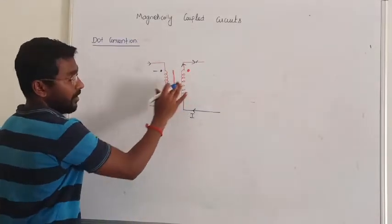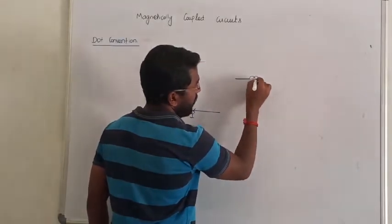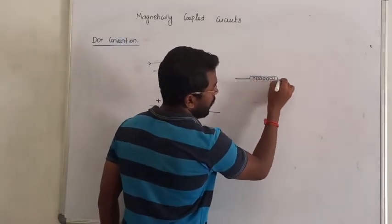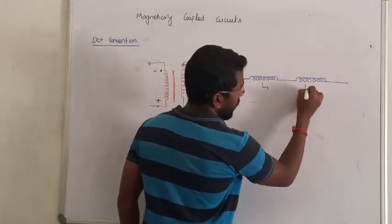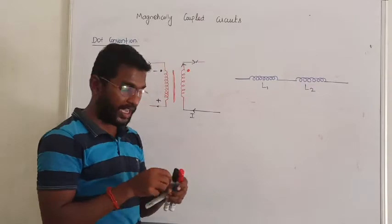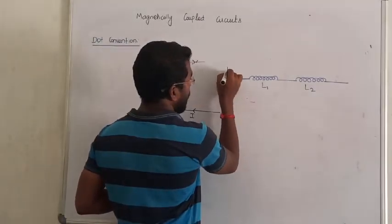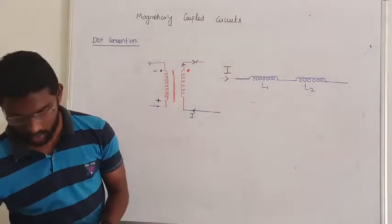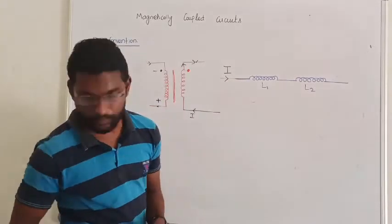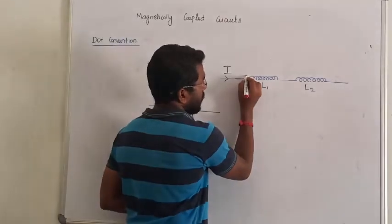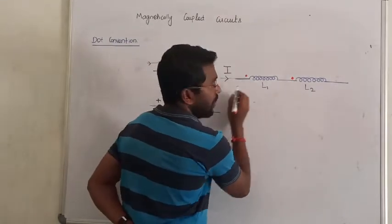I hope you all understand the logic behind the dot convention. With the help of the dot and turns, we find the polarity of the generated voltage. Now if our series coil has become — let me take a series coil, very simply. Let me take inductance L1 and inductance L2.